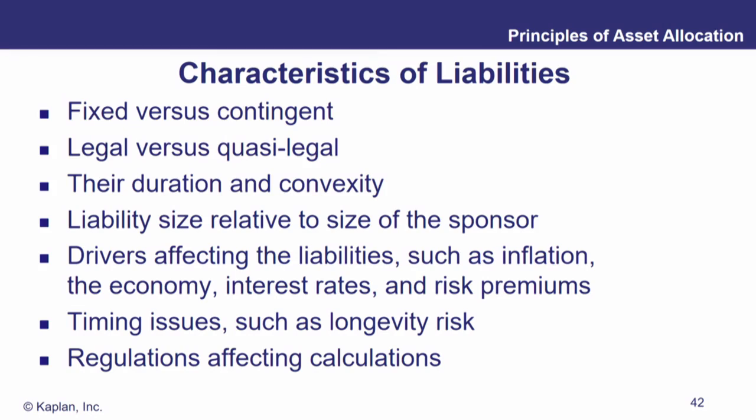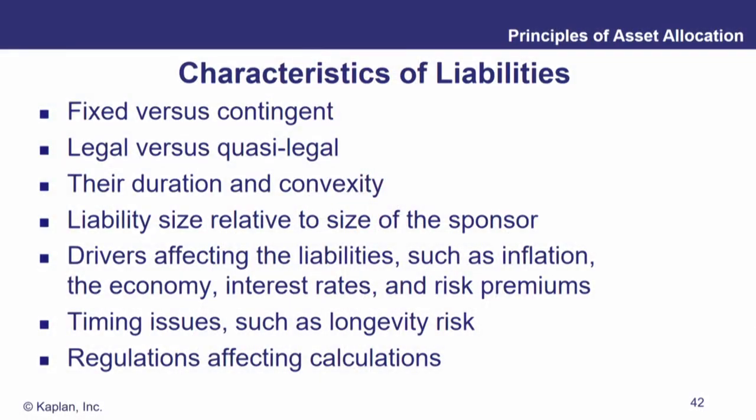Timing issues such as longevity risk play a role in pension planning and life insurance planning. There are also regulations that might affect calculations — for example, required discount rates used to calculate the present value of liabilities, imposed on pension funds or insurance companies by regulation. Generally, liabilities we would call essential needs require a lower discount rate and, as a result, have a higher present value.